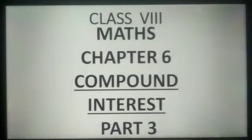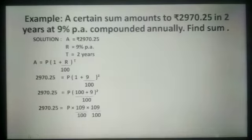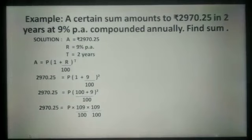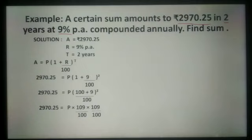Hello students, today we will continue chapter Compound Interest. We will discuss some examples. In this example, a certain sum amounts to Rs. 2970.25 in 2 years at 9% per annum compounded annually. Find the sum.